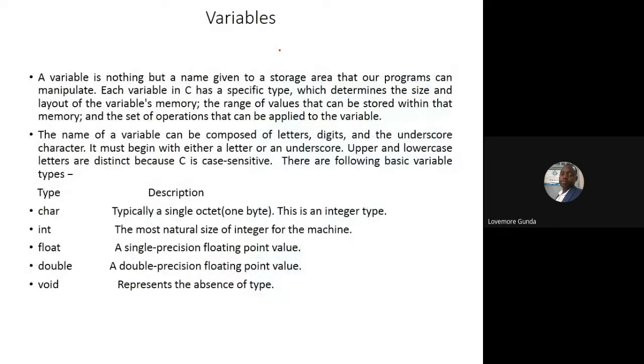A variable is just a name that you give to a storage area so that it can be manipulated by your program. If you are creating a variable, you should give it a type. Once it gives the type, then C will know the size of that variable in terms of memory allocation. If it says maybe it's char, means it's a character, C will know that this will occupy maybe one byte. Float occupies more space, double occupies more space. Then void, it means there is no type.